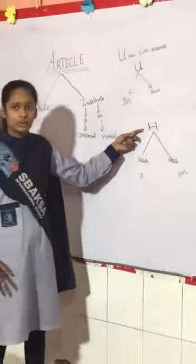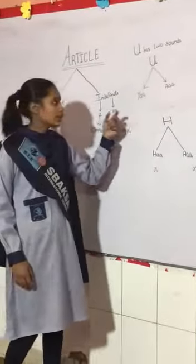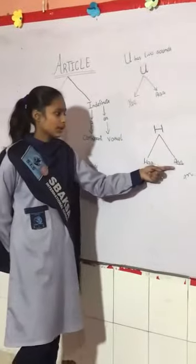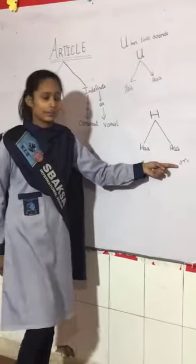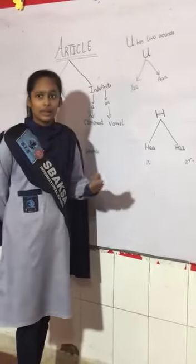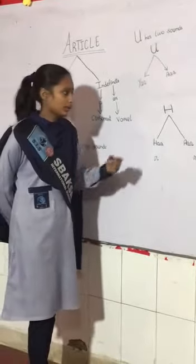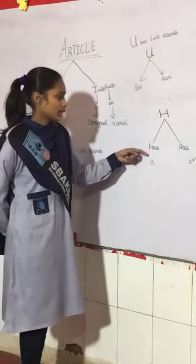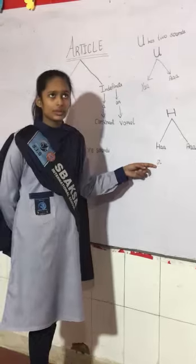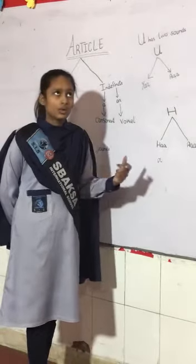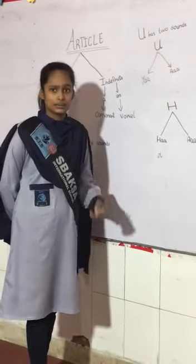H is a confusing letter. It's not a vowel, but we sometimes use 'an' with it in articles. When H gives the silent sound — as in 'honest', 'honesty' — we use 'an' there. When H gives the 'ha' sound — as in 'a horse', 'a home', 'a house' — we use 'a' there.